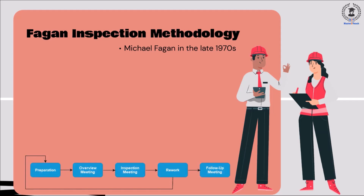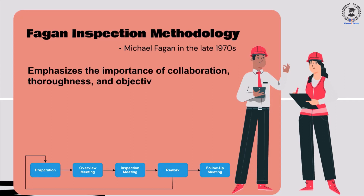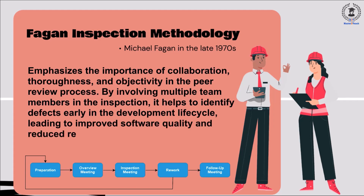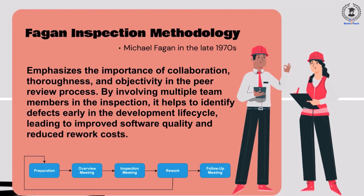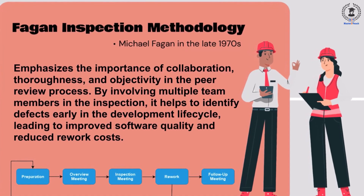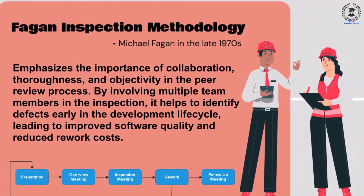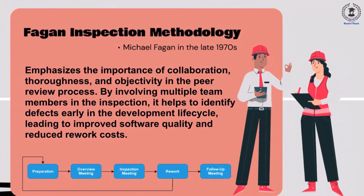The Fagan inspection methodology emphasizes the importance of collaboration, thoroughness, and objectivity in the peer review process. By involving multiple team members in the inspection, it helps to identify defects early in the development lifecycle, leading to improved software quality and reduced rework costs. Additionally, the structured nature of the methodology helps to ensure consistency and repeatability in the inspection process, making it an effective quality assurance technique in software development projects.